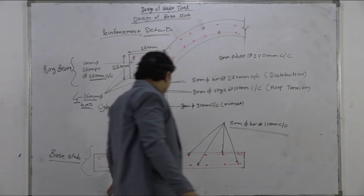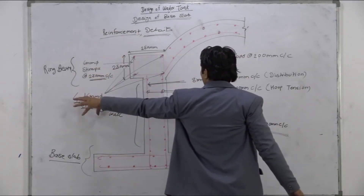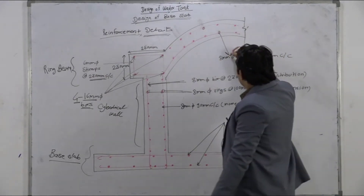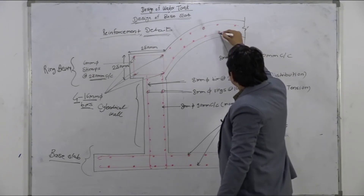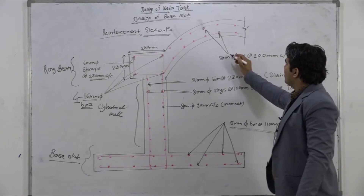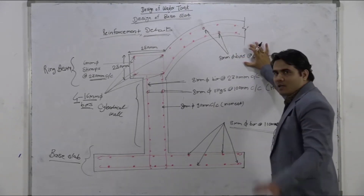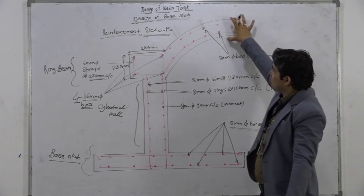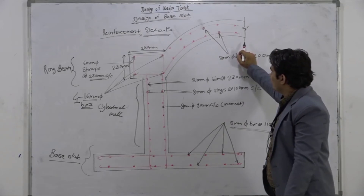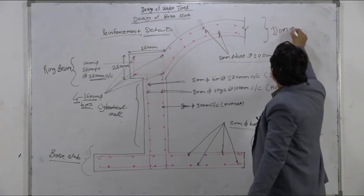Finally, at the top we have the dome. We provided 8 mm diameter bars at 200 mm center to center for the dome. As mentioned at the beginning, the design of the dome is done for the gravity load using the shell method. This is all about the dome.